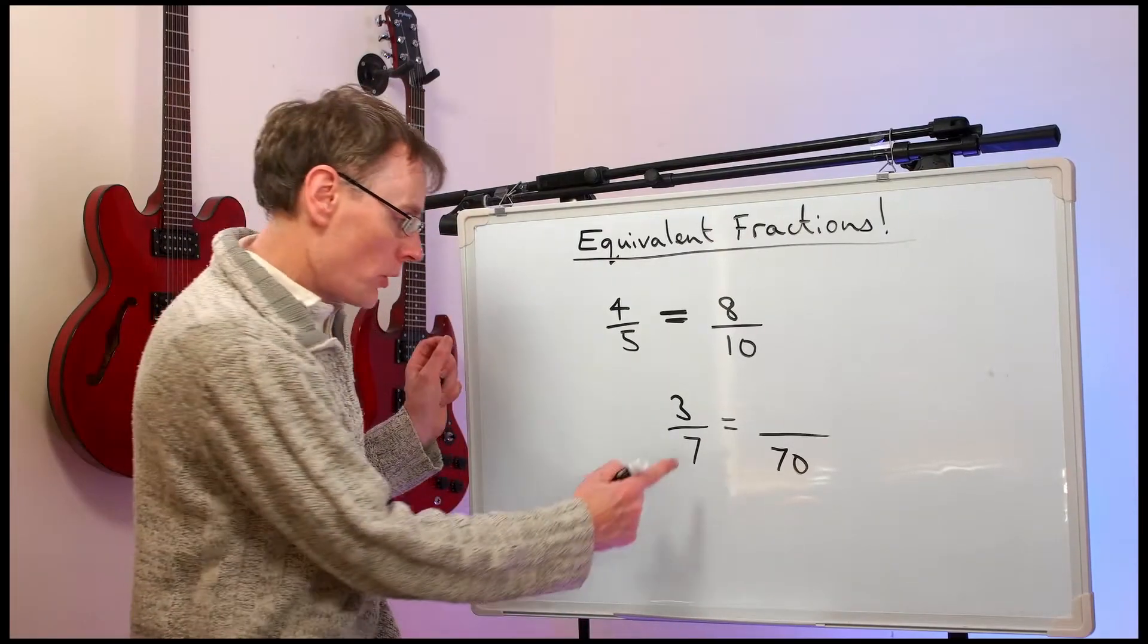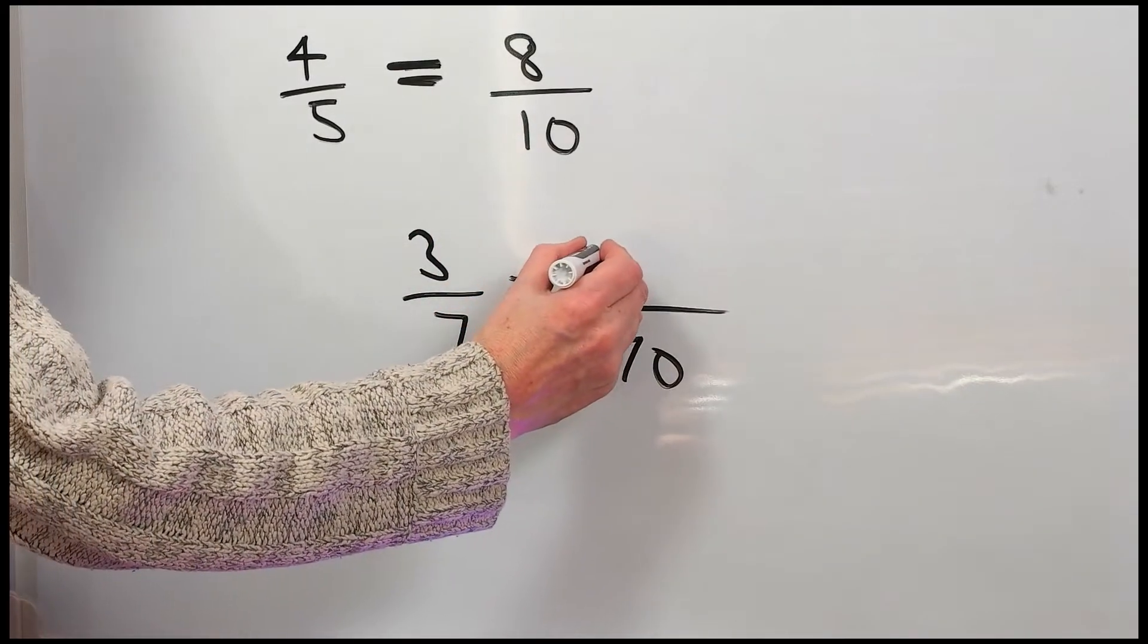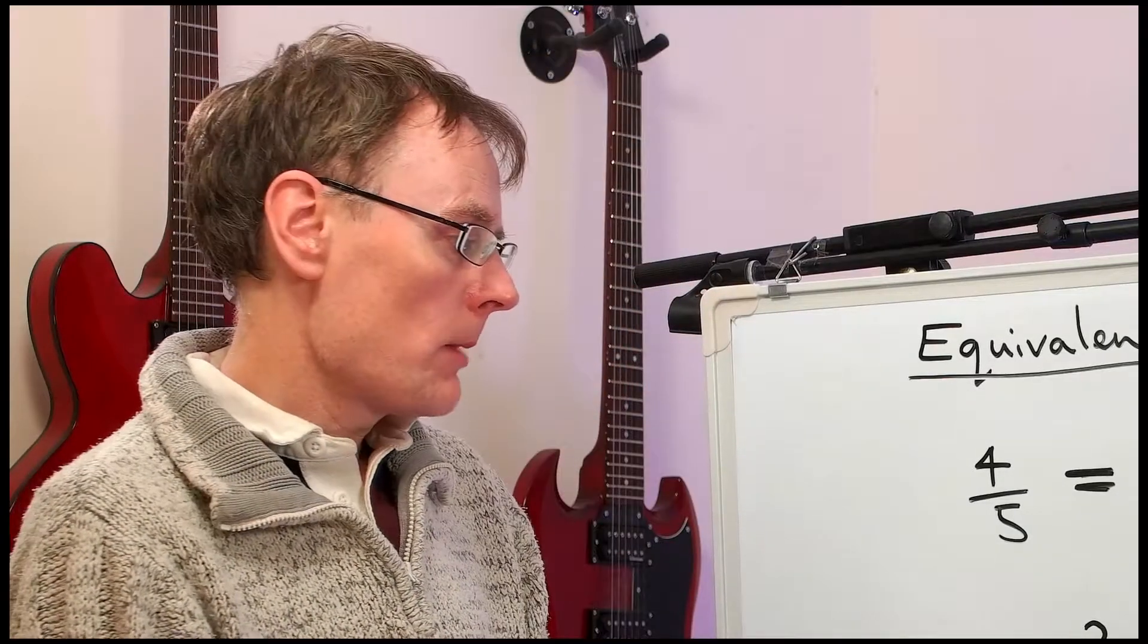Well the bottom has been multiplied by ten so we multiply the top by ten. Three tens are thirty. They're both the same number.